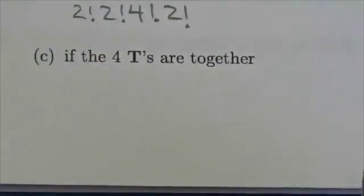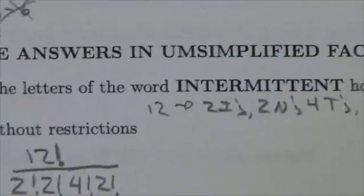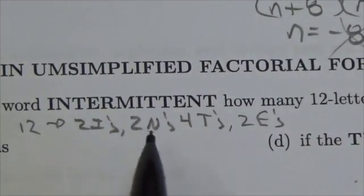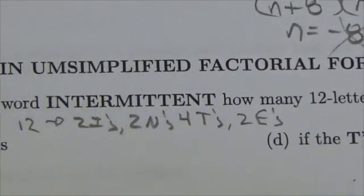Hi everyone. This question is about permuting the letters in the word intermittent, which has 12 letters: two I's, two N's, four T's, and two E's.